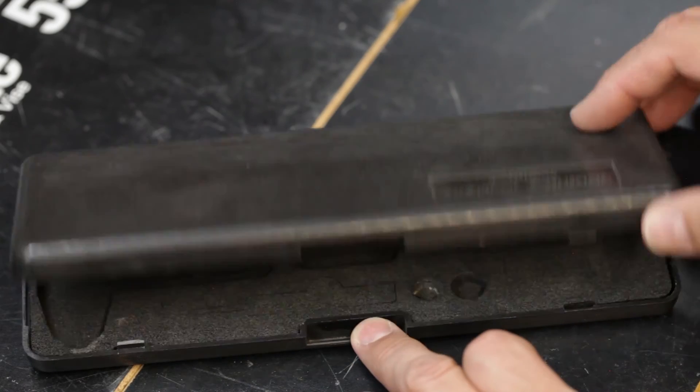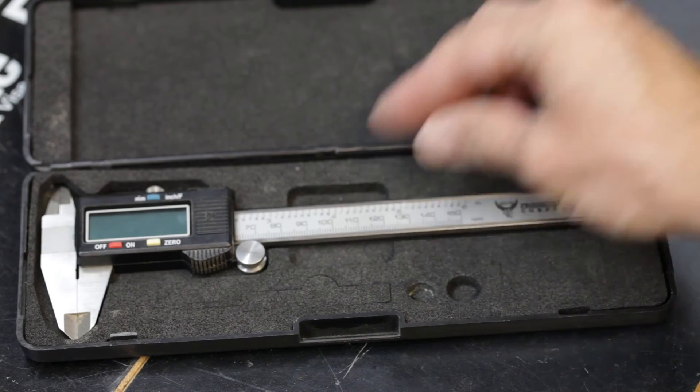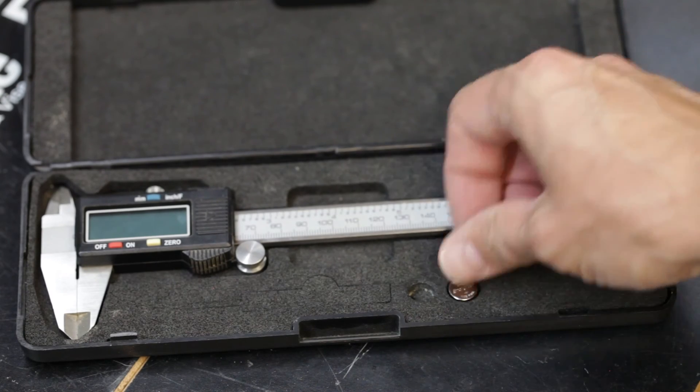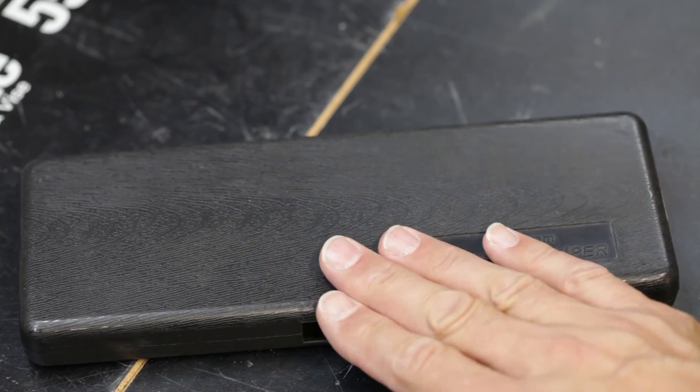The device also came with a plastic carrying case, just kind of inexpensive, but it does protect it. And inside it has foam cut-out for the calipers and two places for batteries. So if you're carrying it around, that kind of protects it.